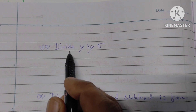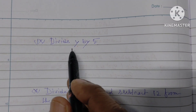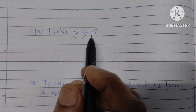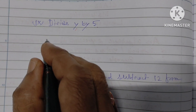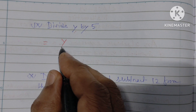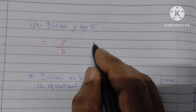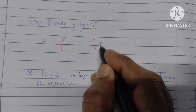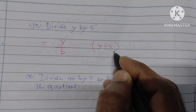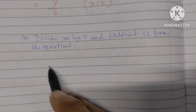Next one: divide y by 5. Y divided by 5 — you write y by 5, that is y over 5.